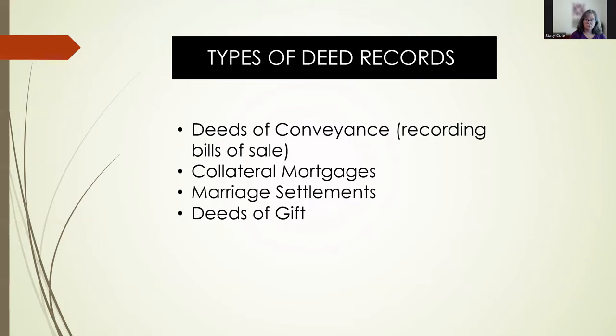Deed records are usually in the superior court records. For the most part, they are contracts between two people that were usually written and signed outside a court setting and then brought in later to be recorded, though not necessarily. This is important because they might be recorded years after the original contract, and the clerk who was copying the original record into the deed book could introduce errors. Notice when going through deed books: it's all the same handwriting until the clerk changes. So if you see your ancestor's signature, it's not their actual signature — that's the clerk's copy of it.